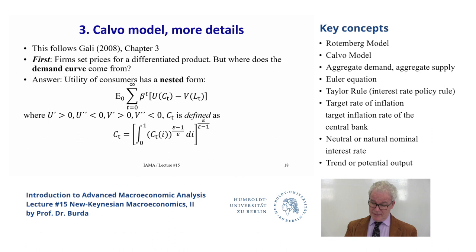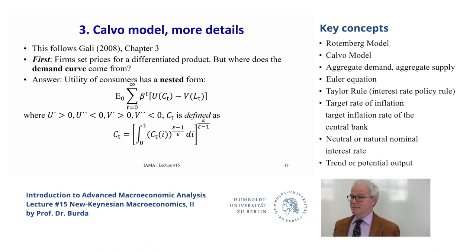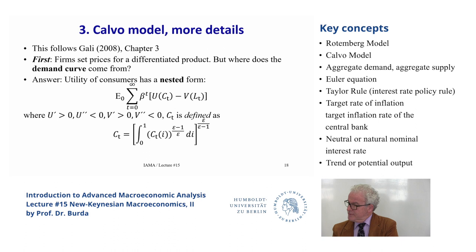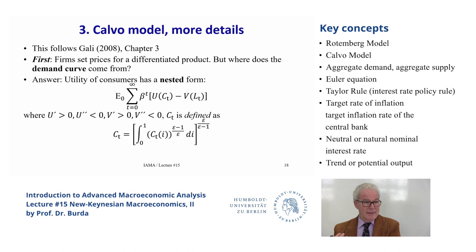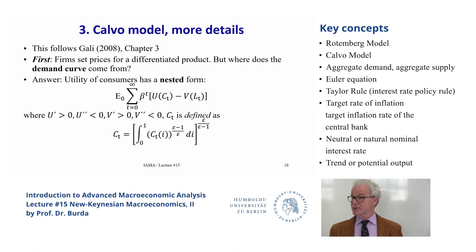Because each product matters to me, I'll have a demand for it. I'm not going to consume all of one product. As long as epsilon doesn't imply perfect substitution, I want a little bit of everything — that's called love of variety. Every product will have a downward-sloping demand curve. This means we can talk about a representative product I, produced by a representative firm I, with a unique product the consumer wants a little of. That gives the producer the ability to set price — the monopolistic competition we want in the New Keynesian model.